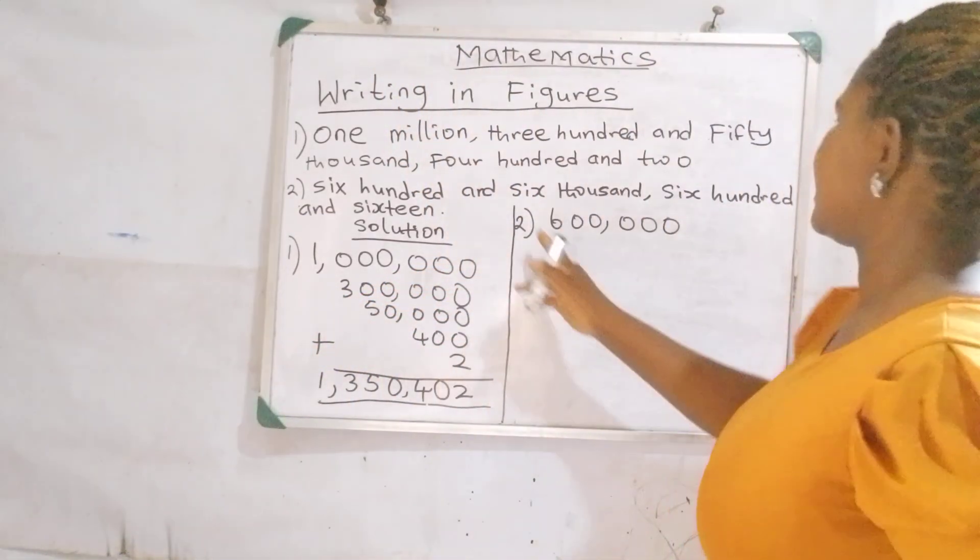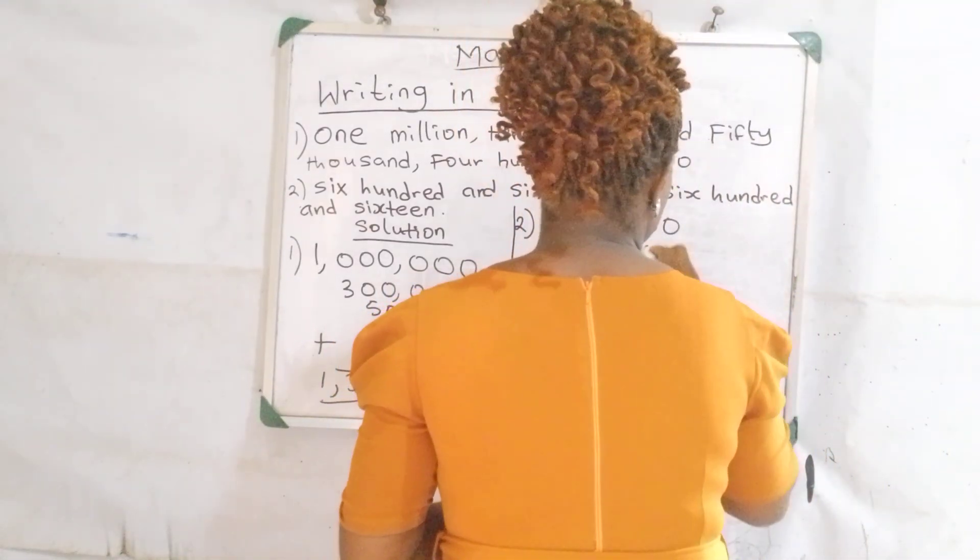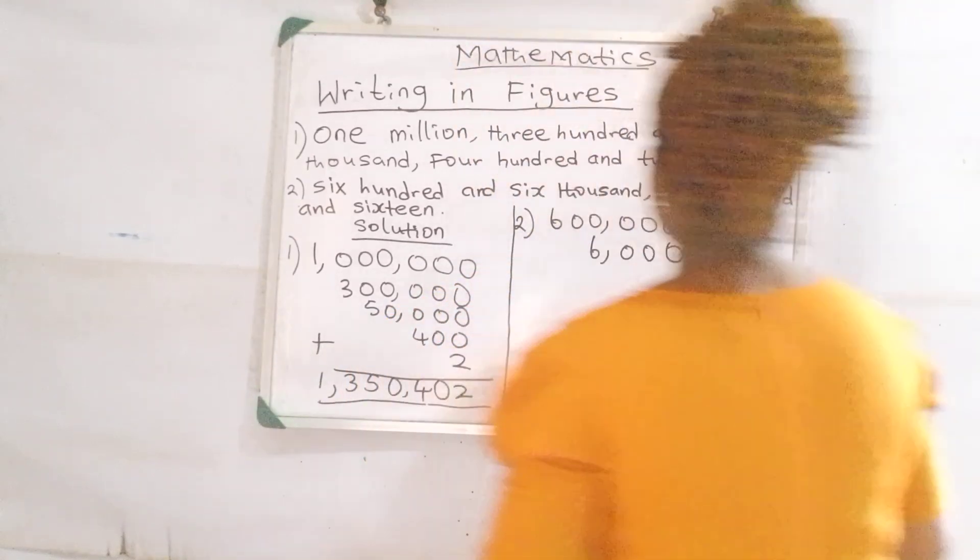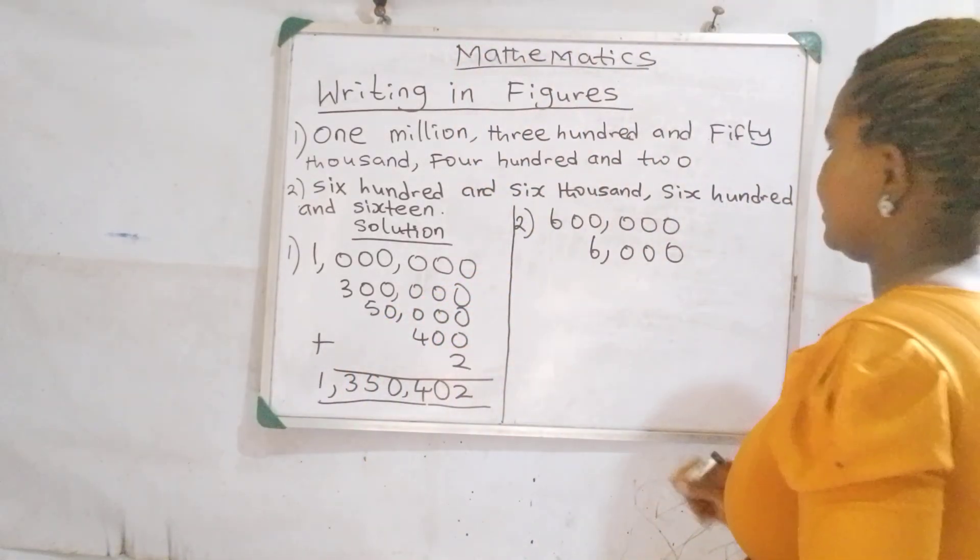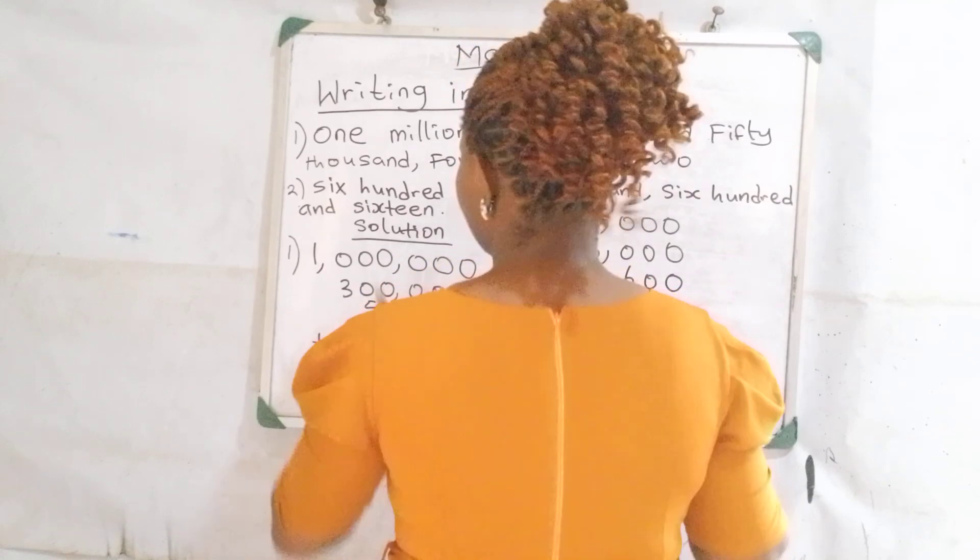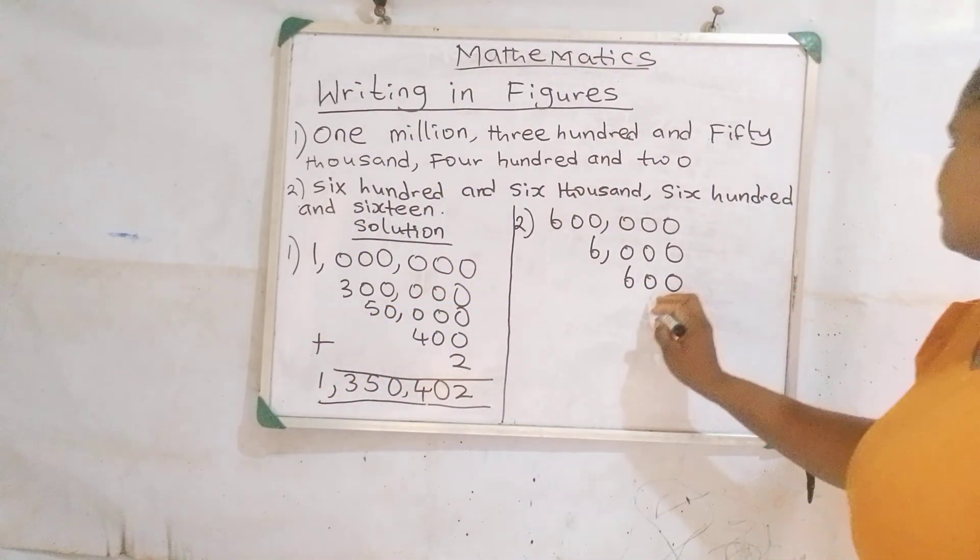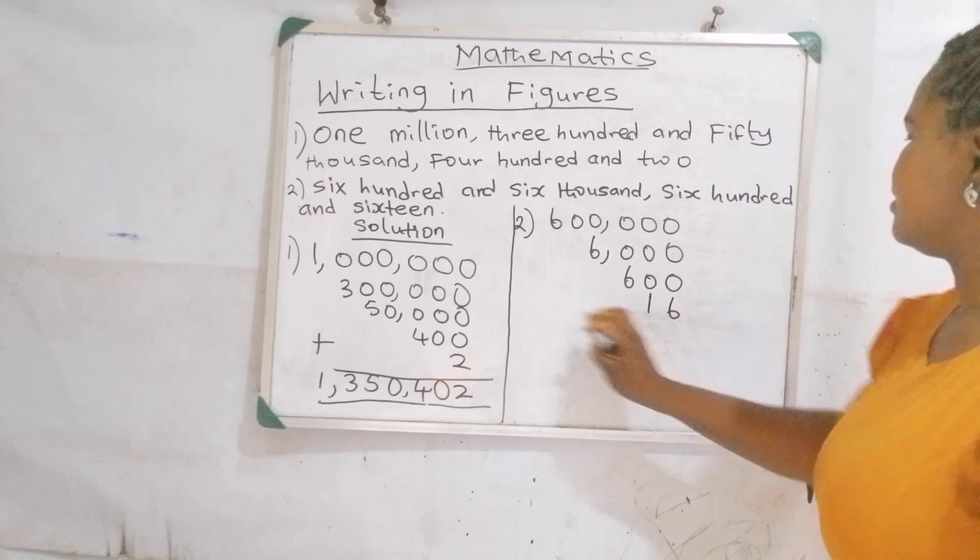The next one is our 6,000, which is 6 and three zeros. We have 600, which is 6 and two zeros. Then we have sixteen. How do we write our sixteen? It's 1 and 6. Then you add up.